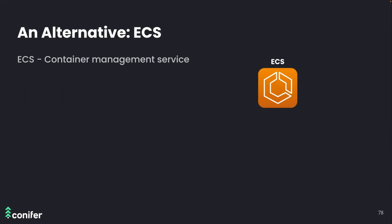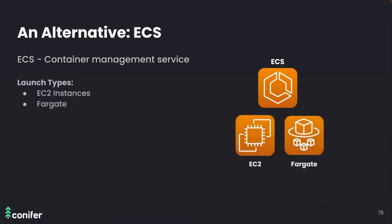Unlike Lambda, ECS offers two launch types: a self-managed solution using an EC2 instance as a task runner, and a serverless fully managed solution called Fargate. We took a bottom-up approach by first getting Cypress to work on EC2, which made it possible to take advantage of the relative ease of debugging in a self-managed solution during initial development. Ultimately we decided to stick with EC2 as our task runner, as it achieved the substantial speed gains Conifer aimed to provide. Implementation with Fargate was deferred as a future optimization.